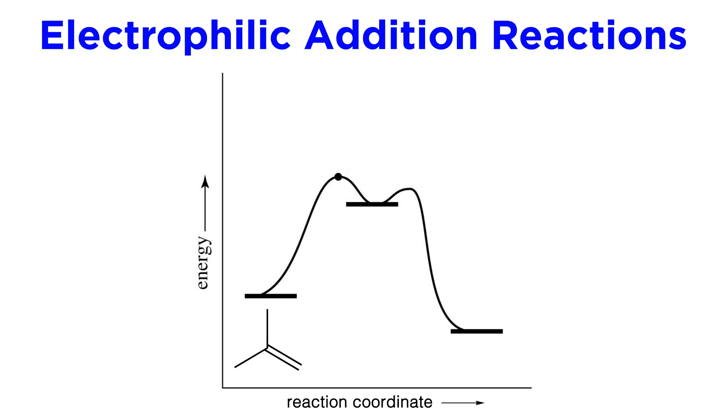First we have the substrate on the left. Then we have a large activation energy leading up to the first transition state, then dipping down slightly to the high-energy carbocation intermediate. This will be the slow step due to the large energy barrier.